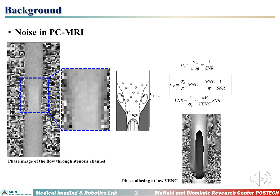When we measure 4D PC MRI, we sometimes suffer from high noise in magnitude and phase data. This phase image shows the flow through the stenosis channel. At this region, the flow is suspected to have recirculation flow with negative velocity. However, it is hard to distinguish the recirculation flow region because the velocity-to-noise ratio is too low.